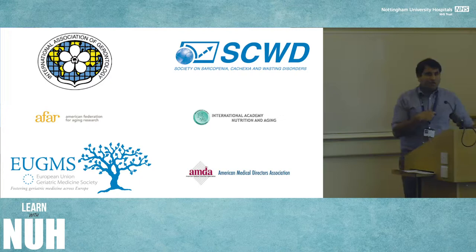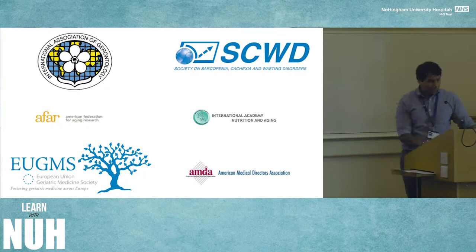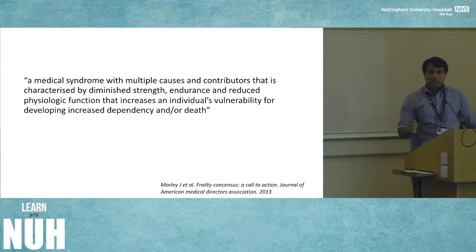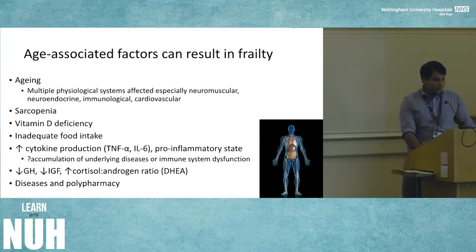In sunny Florida in 2012, many international and European agencies — sarcopenia, nutrition, and gerontology bodies — got together for a world consensus meeting on frailty. They came up with a definition with some key concepts: it's a syndrome with multiple causes, involving diminished strength, endurance, and reduced physiologic function. The key element is that it increases an individual's vulnerability for developing increased dependency or death — that susceptibility, that vulnerability, is the key aspect.